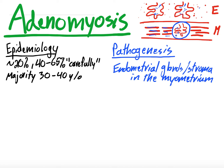That is abnormal. Endometrium turns over — it undergoes hypertrophy and then breaks down. That's what menses is: the endometrium breaks down and sloughs off. So if that's happening within the myometrium, you're going to get pain and abnormal bleeding, because those endometrial glands and stroma should not be there.